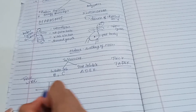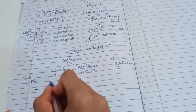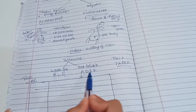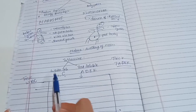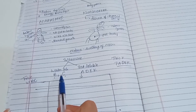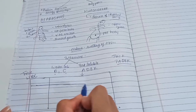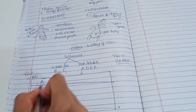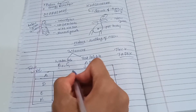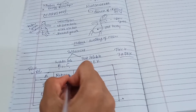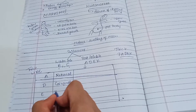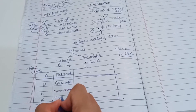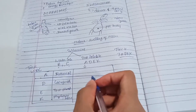Fat-soluble vitamins are A, D, E, and K. Vitamin A is also called Retinol. Vitamin D is Calciferol. Vitamin E is Tocopherol. Vitamin K is Phylloquinone.